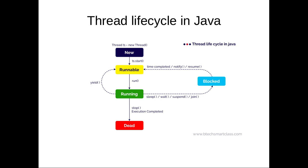In the running stage, if operations like sleep, wait, suspend, or join are encountered, the thread will enter the blocked stage. For example, if the next statement is to wait for 5 seconds, it will be in a blocked state, wait for that amount of time, and then come back to the runnable stage. Once that blocked process is completed, it will return to the runnable stage.